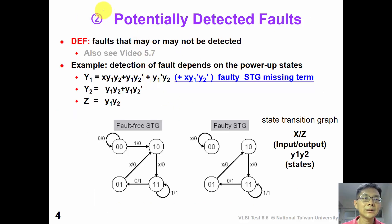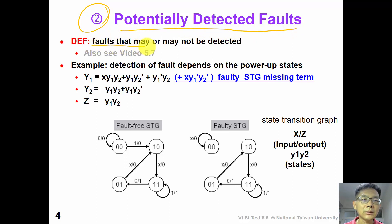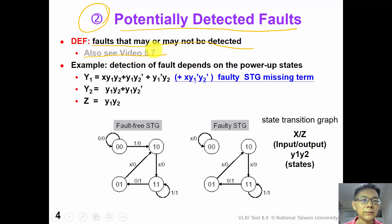The second problem is about potentially detected faults. The definition of potentially detected faults is those faults that may or may not be detected. Potentially detected faults have been introduced earlier in video 5.7.